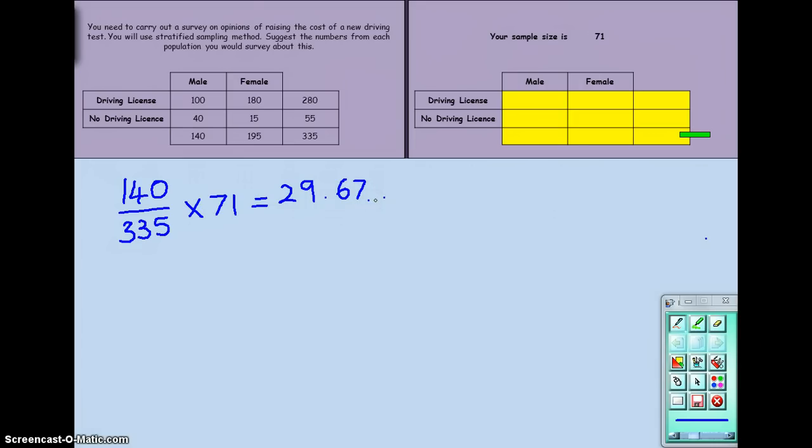Now, we can't sample part of a person, so we're going to round that number to the nearest whole number, or round down as appropriate. So 29.67 is rounded to 30 for the nearest whole number. So the number of males that I'm going to sample in my population is going to be 30.